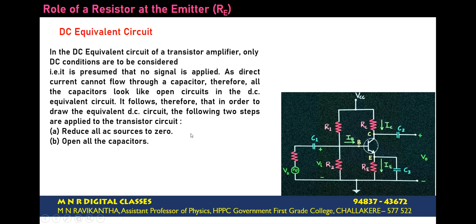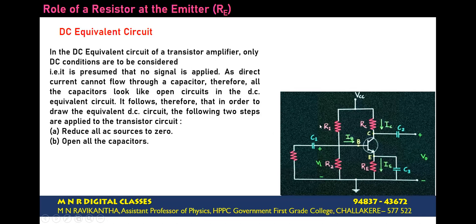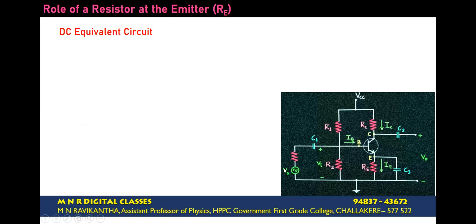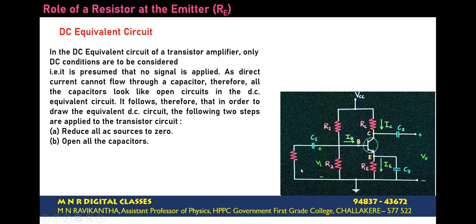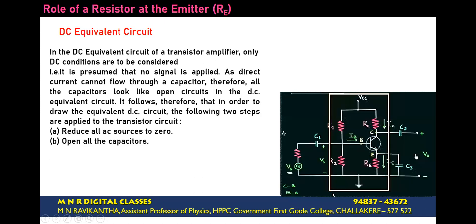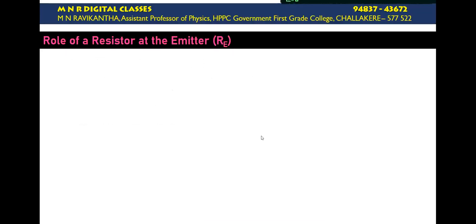All AC sources should be eliminated or short-circuited. Now let us draw the DC equivalent circuit. First, we have one AC source, so it has to be eliminated by putting a short. The next step is to open up all the capacitors. We have three capacitors: C1, C2, and C3. All three are opened and simply disconnected. When they are disconnected, this part gets eliminated. So we are left with only the four resistors with the transistor.